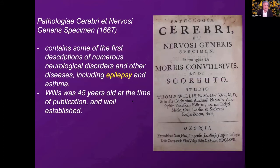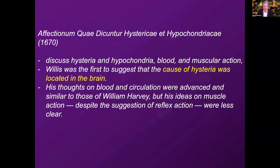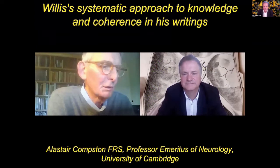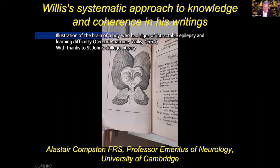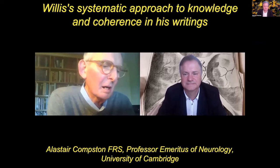In the Pathologiae Cerebri, Willis clearly described the symptoms of epilepsy, as Arjun mentioned in his talk. In his next book, he identified the cause of hysteria as the brain and not other body parts, which was extremely progressive. His writing is phenomenal. Alastair Compton explains: hardly a page goes by without an observation which resonates with the symptoms, signs, and mechanisms of disease that would be encountered by any physician, neurologist, gastroenterologist, or respiratory physician working in any one of the last four centuries.